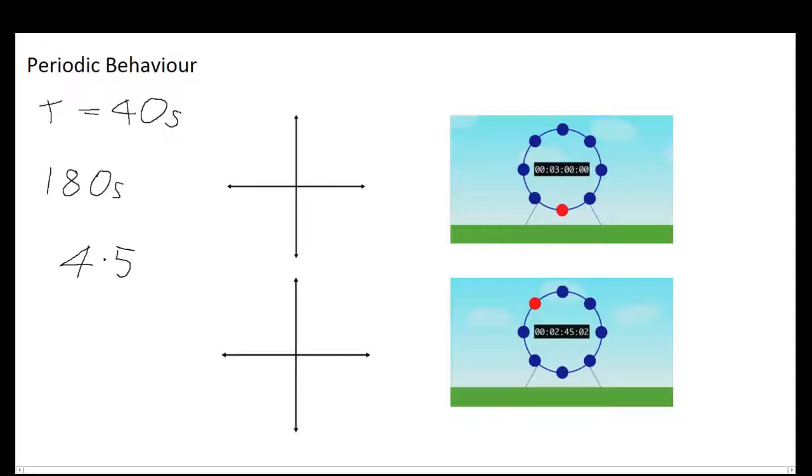You can also just say that once you have four periods, this is 160 seconds, then it will have gone around one, two, three, four, that is four revolutions, and then for the last one it will only go around half a revolution. So what you will end up with is the red car at this top position here.